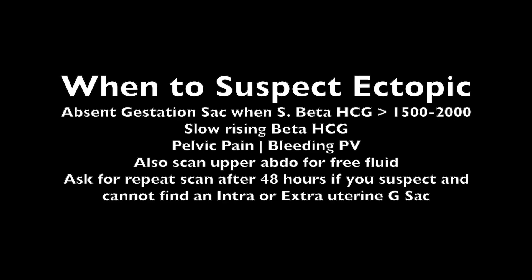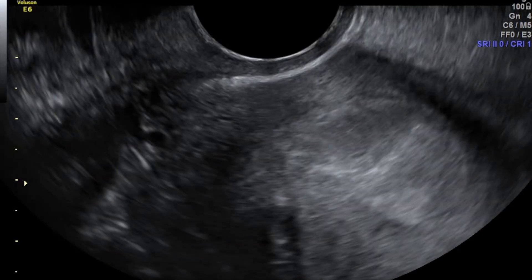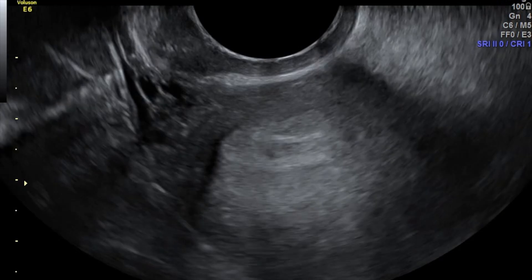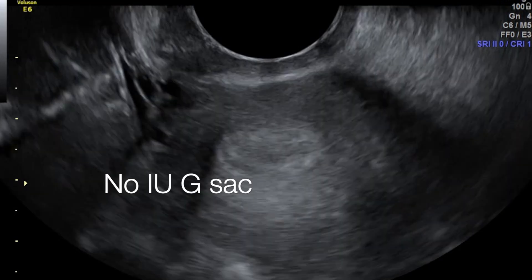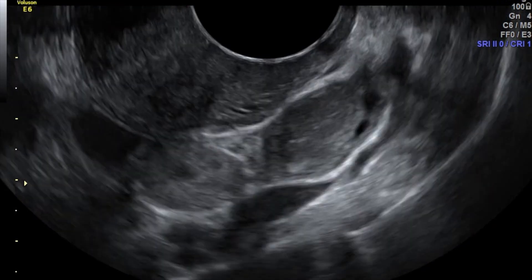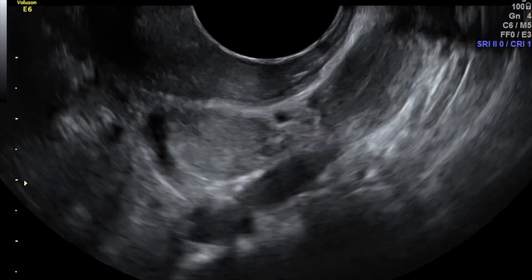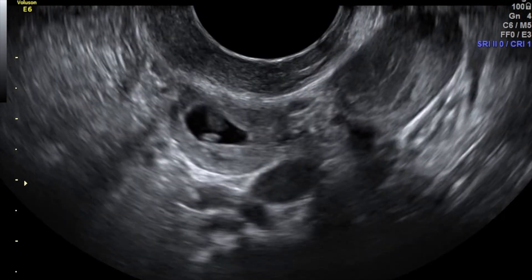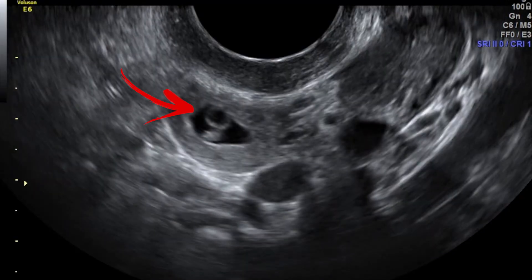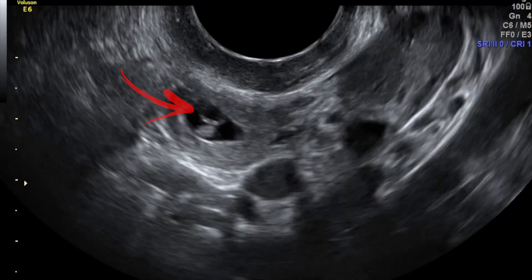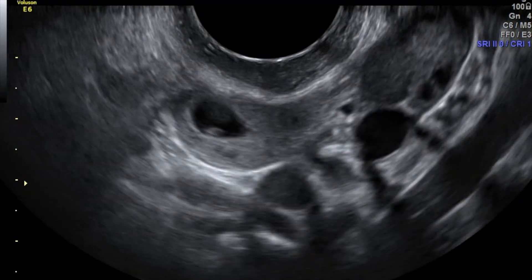We have to hunt for an ectopic until we find one. Here are some cases that highlight the various features of ectopic pregnancy. This first patient is a 21-year-old female with a beta-HCG of 6000. A previous scan done 48 hours ago showed no intrauterine pregnancy and no ectopic. As we scan the area near the left ovary, we see a very clear gestation sac lying adjacent to the left ovary.